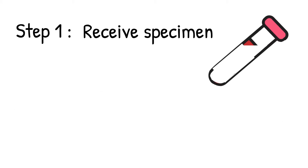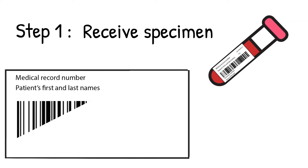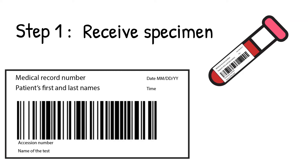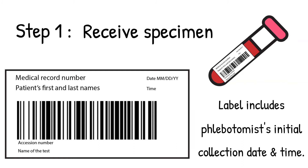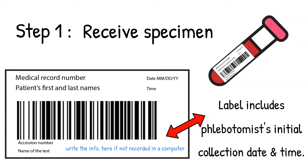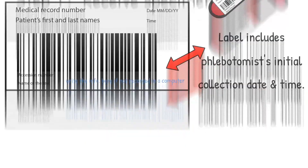Step 1: Follow laboratory protocols on receiving the specimen. This usually includes verifying that the sample is properly labeled — name and medical record number are legible. On the label, it should include the phlebotomist's initials, date, and time of collection. However, some hospitals use computer systems where the collector identifier, date, and time of collection are recorded in the system, so sometimes it won't be on the label. Double-check with your policies and follow those, as each place is a little different, but you cannot go wrong when you follow your laboratory policy.